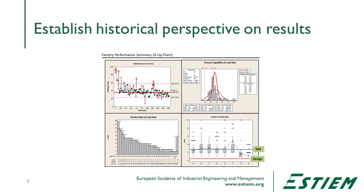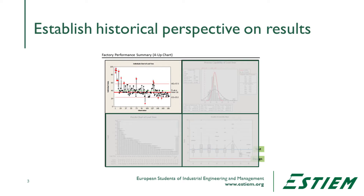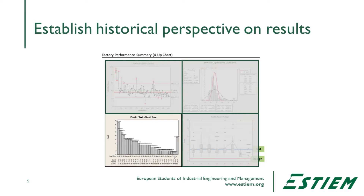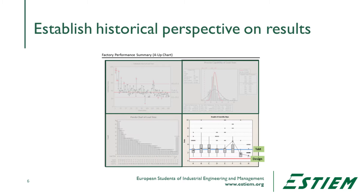So we see the 4UP chart, and what we start seeing is, in this individual's chart, we can see where their problems in productivity are. The capability analysis tells us how well performance is happening from the actual state to the ideal state. The Pareto chart tells us where the issues are, and the process chart in terms of the ANOVA step-by-step tells us which subgroup we need to drill down into next.